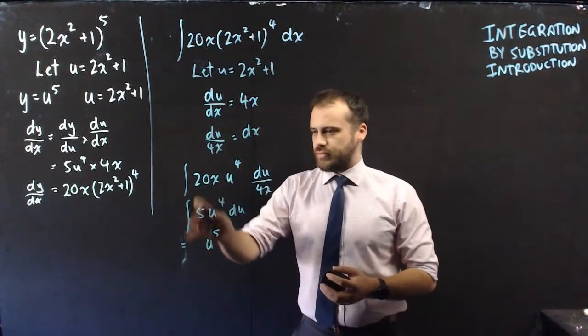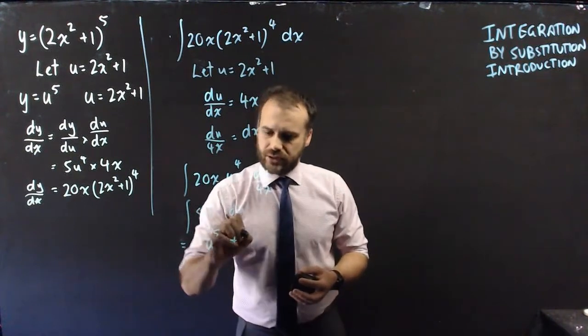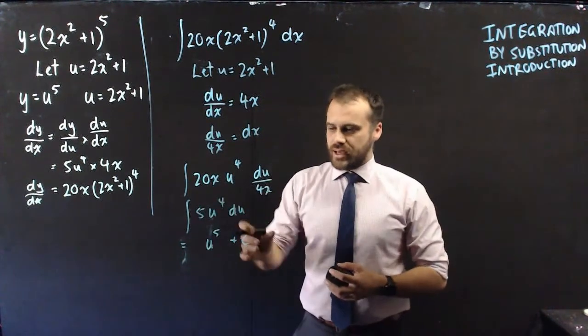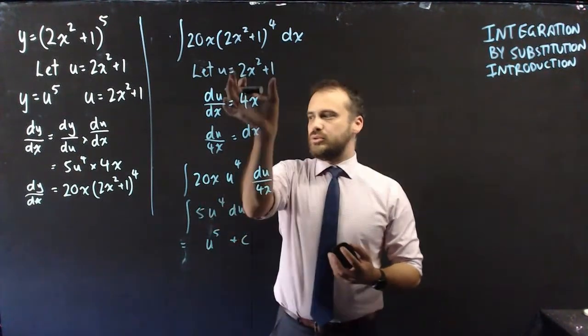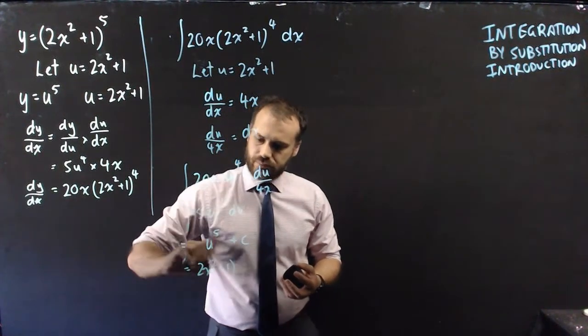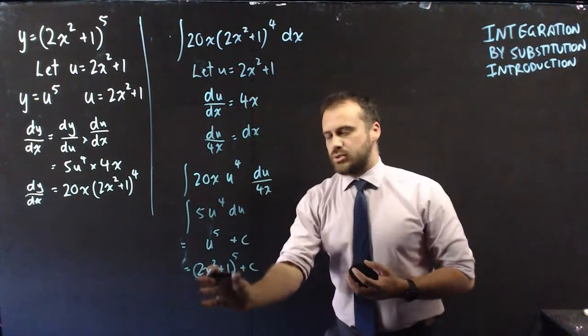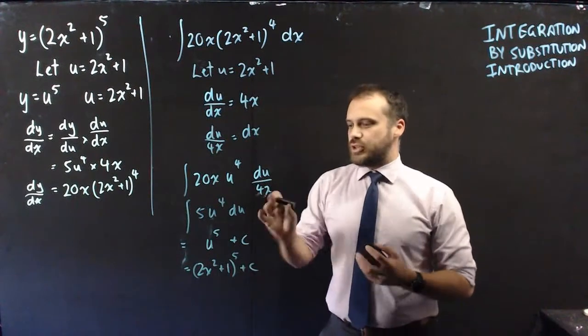So we have the integral of 5u^4 with respect to u is u^5. Don't forget the plus c here. And then, what was u originally? u was 2x² + 1. So we can put that 2x² + 1 back in for u.